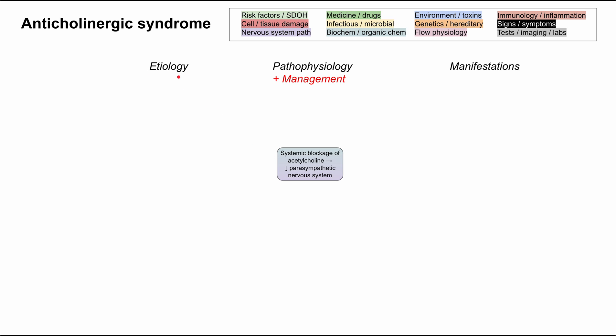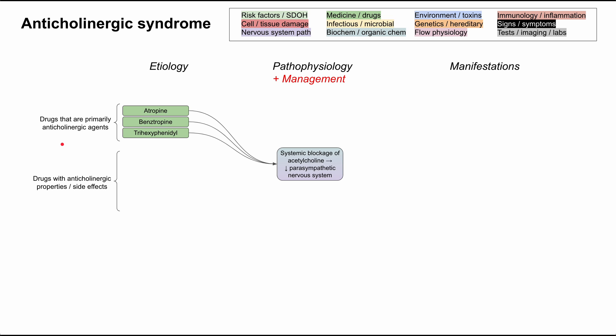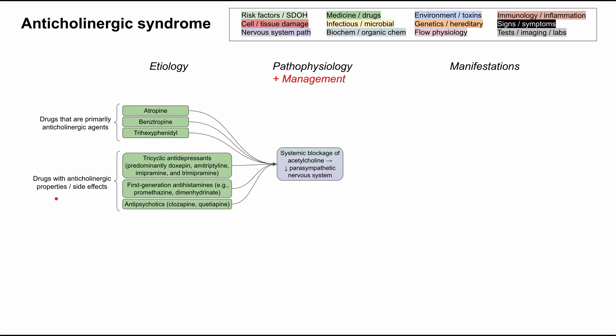First, let's talk about the etiology. This can happen through drugs — there are drugs given primarily for their anticholinergic effects, including atropine, benztropine, and trihexyphenidyl. These all cause systemic blockage of acetylcholine as their primary intended use, so usually they've been given or taken in too high a dose. There are also drugs with anticholinergic side effects — given for another purpose but significantly affecting the patient and leading to this syndrome.